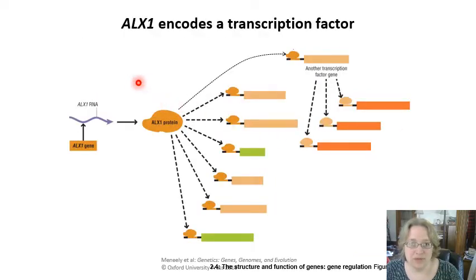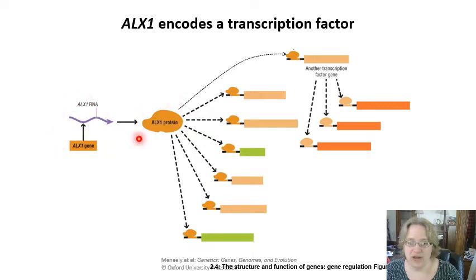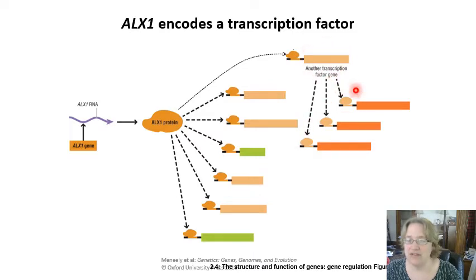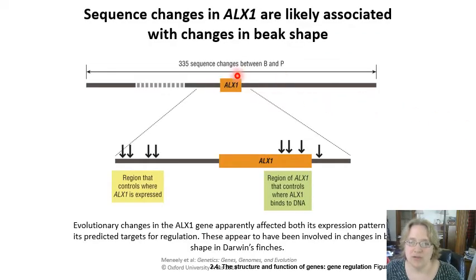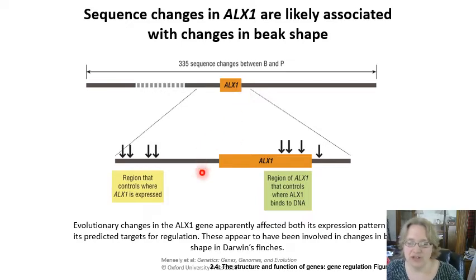Going back to the beak example from chapter one, we talked about ALX1 — a gene that codes for a transcription factor. This ALX1 protein affects a whole lot of other genes, and even a separate transcription factor gene that can turn on and cascade to affect other genes as well. You can see that regulatory networks can get very complicated very fast. When ALX1 gets changed or mutated, it has a big downstream effect on genes that affect how beak shape is determined in these finches.